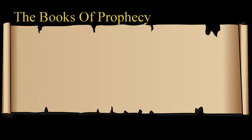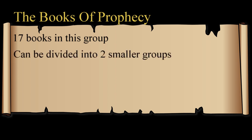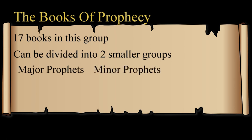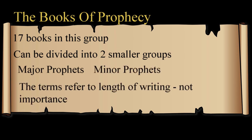The books of prophecy: there are 17 books in this group, which can be divided into two smaller groups — the major prophets and the minor prophets. The terms major and minor refer to the length of the writings, not their relative importance. The minor prophets' writings are shorter in length than the major prophets, with one exception: the book of Lamentations, written by the prophet Jeremiah, is shorter than Hosea, but is grouped with the major prophets as an extension of Jeremiah's previous writing.